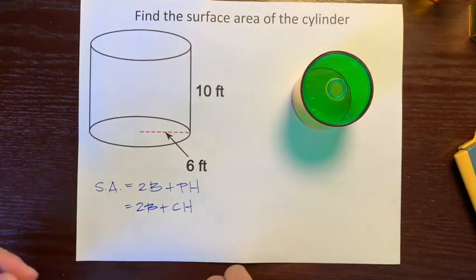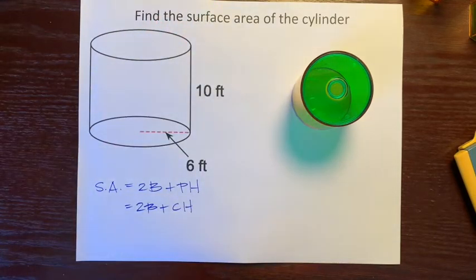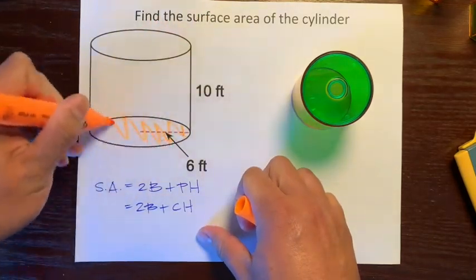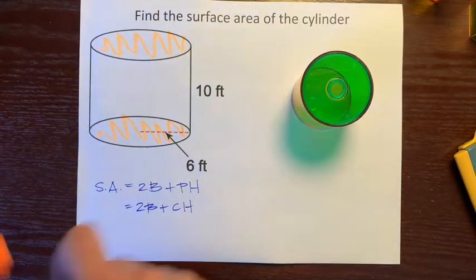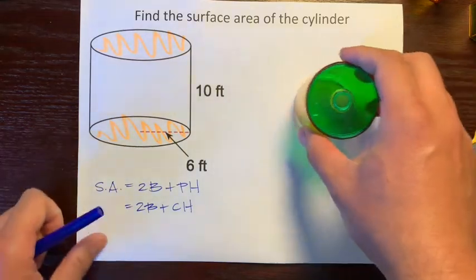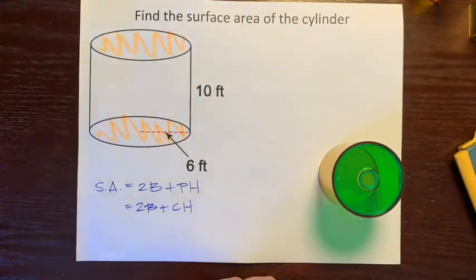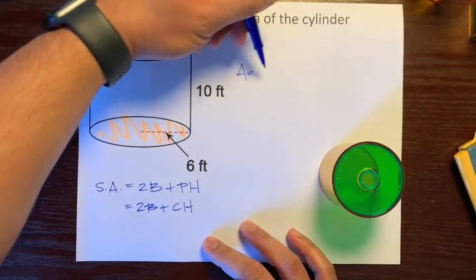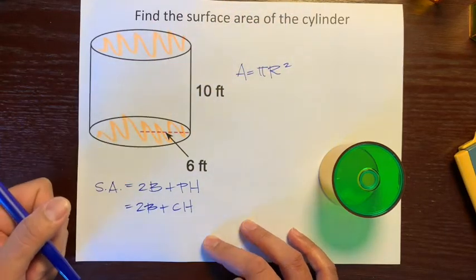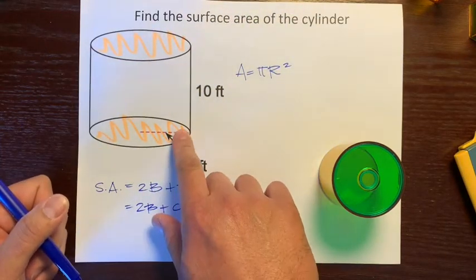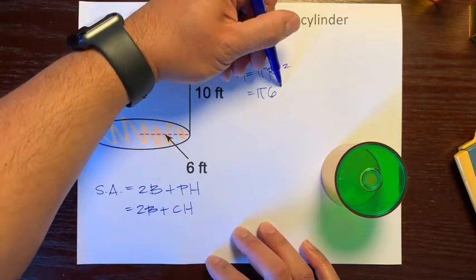Let's look at what we have here. Our two bases are these two circles. Let's find the area of one of these circles. The formula for the area of a circle is pi radius squared. They give us the radius, which is 6, so we'll just plug that in.